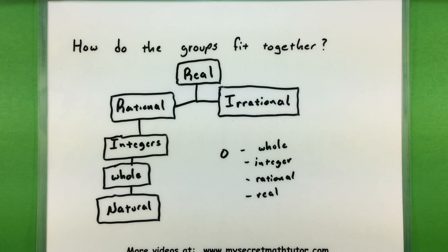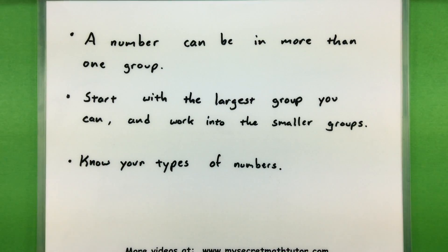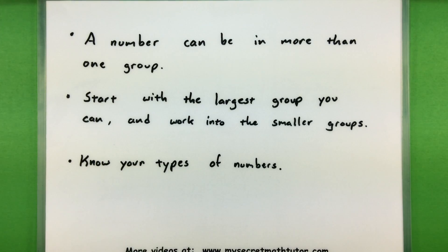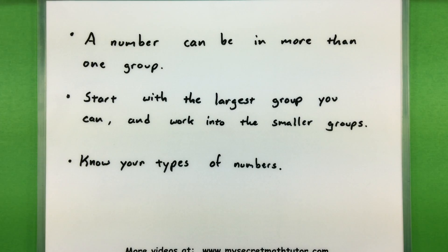When you're going through the classification process, always keep in mind that a number can definitely be in more than one group, especially if it has those other groups connected above it. Start with the largest group you can and work into the smaller groups as you go down. You should probably memorize what makes a natural number a natural number, what makes a rational number a rational number — that will definitely make the classification process go very quickly.